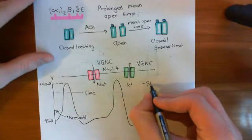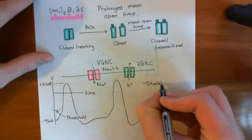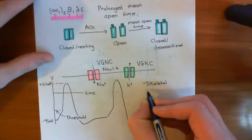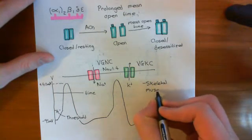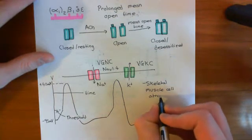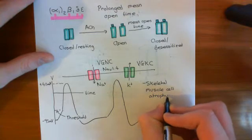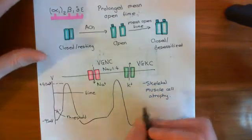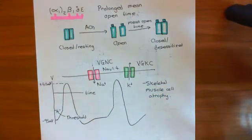So you get skeletal muscle cell atrophy. So they gradually lose all of their skeletal muscle cells. Well, not all of them, but a huge number of them. Skeletal muscle cell atrophy. And this leads to many people with these slow channel syndrome mutations becoming wheelchair-bound because the muscles just simply do not have the strength to hold up the body anymore.